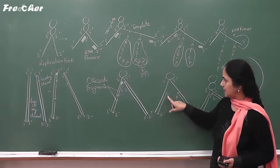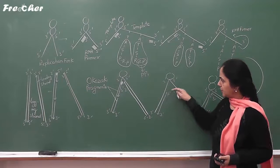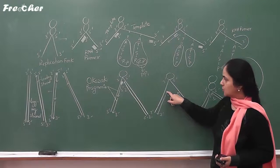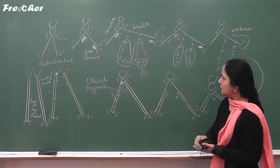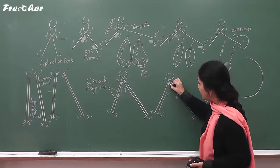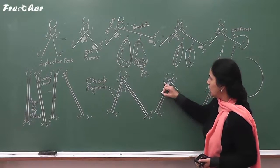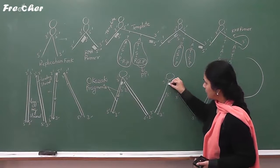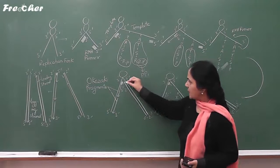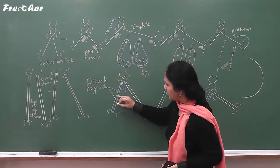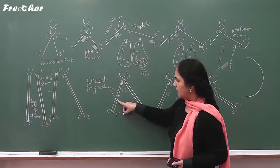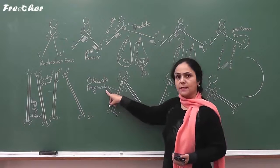However, where the 5' end is exposed, DNA nucleotides cannot join at that end. So, again, a new RNA primer is required, which is produced at the 5' end of the new strand. This RNA primer then forms its fragment. The first fragment formed and the second fragment formed are known as Okazaki fragments.